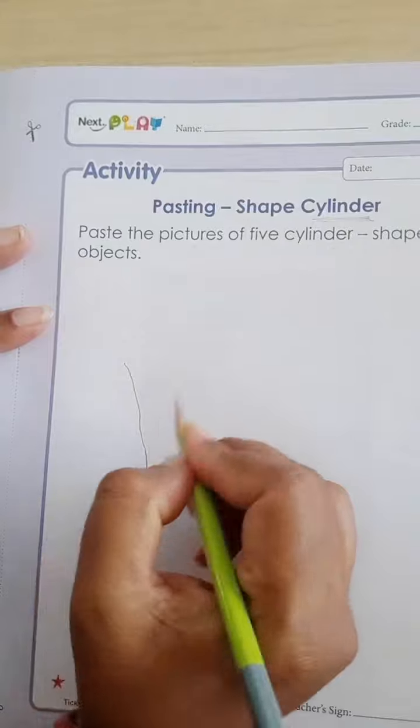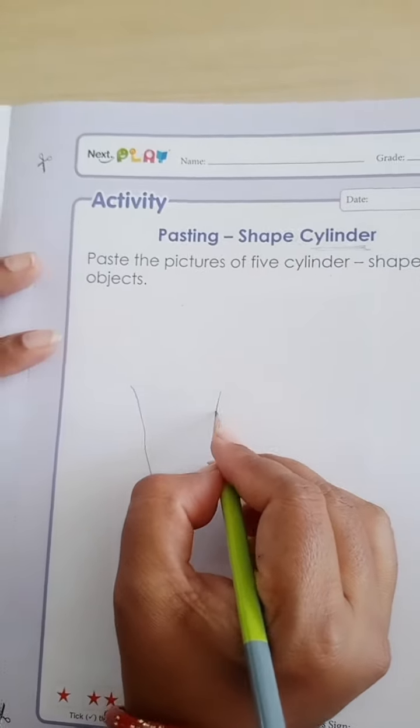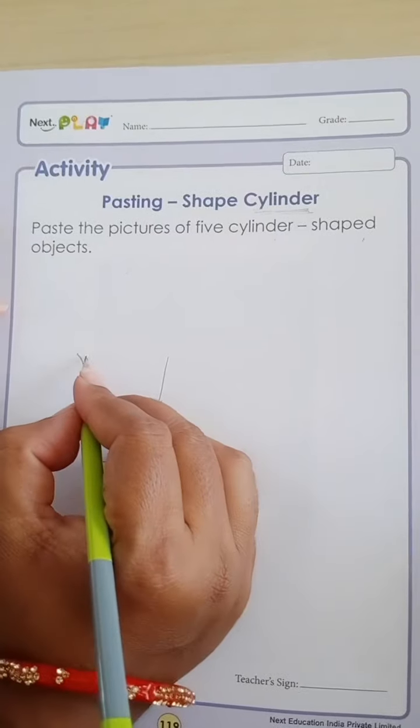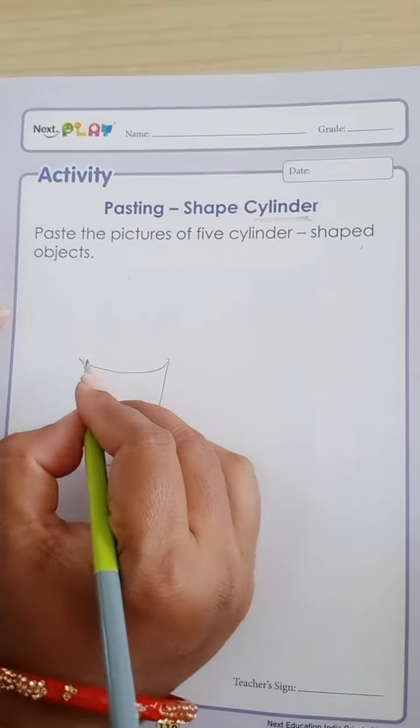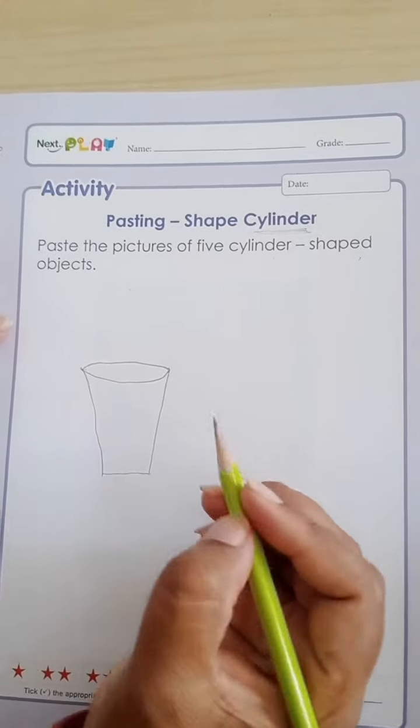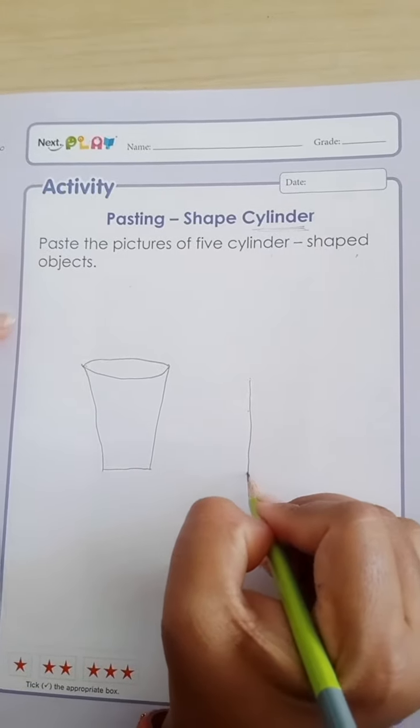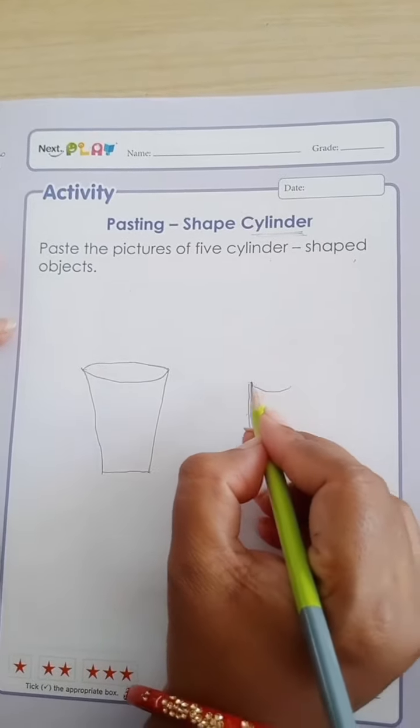See, ma'am is drawing one object which has cylinder shape. You tell me which object is this. Yes, this is glass. Now, ma'am will make a candle.